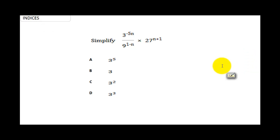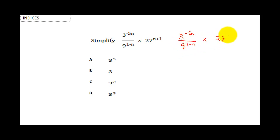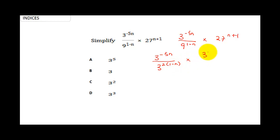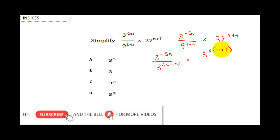The next question asks us to simplify: 3 raised to the power negative 5n, all over 9 raised to the power (1 minus n), times 27 raised to the power (n plus 1). We rewrite this as 3 raised to power minus 5n, all over 3 squared raised to the power (1 minus n), times 3 cubed raised to the power (n plus 1).